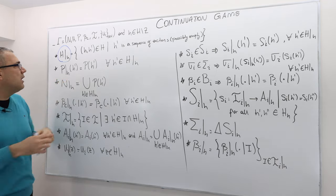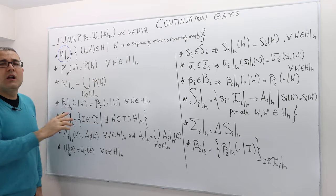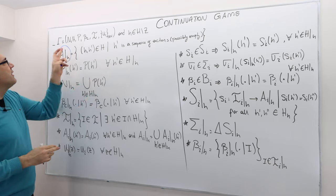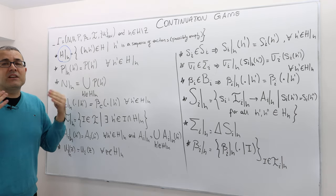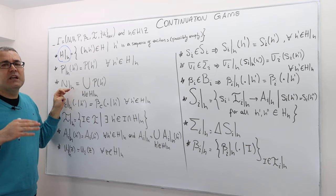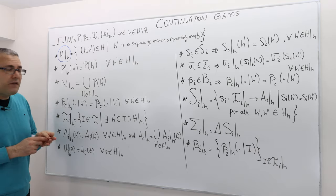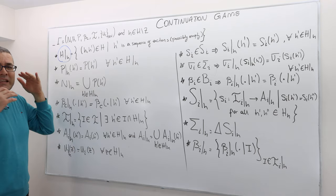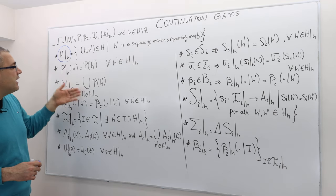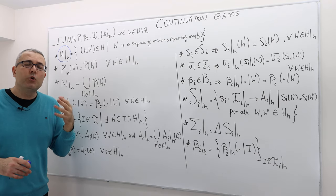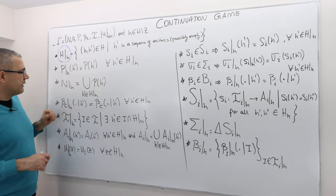I can also restrict the player function. The restricted player function will actually behave exactly the same as the normal player function, but we define it only for histories that are contained in this set. The restricted player function is not well defined for histories that are outside of this constrained history set. The set of players constrained by history h basically tells me all the players who are going to move for the rest of the game after history h.